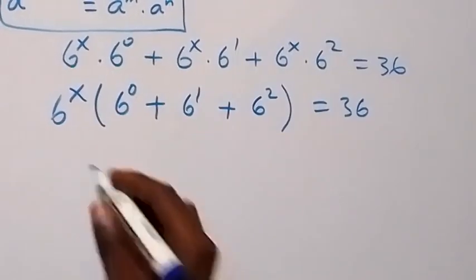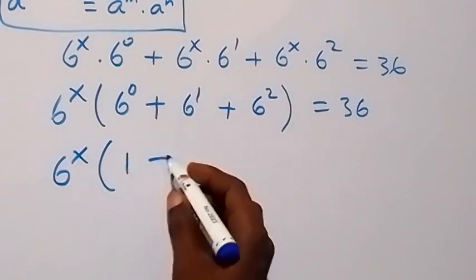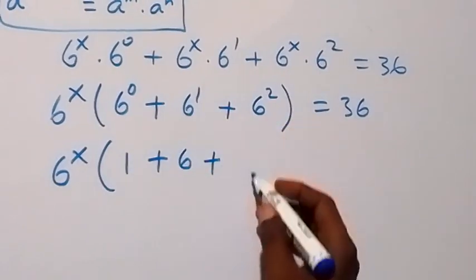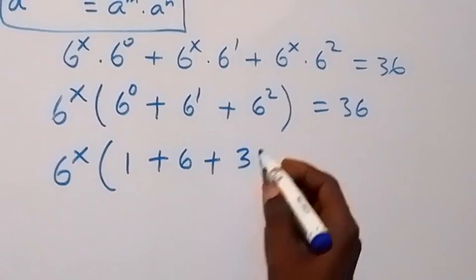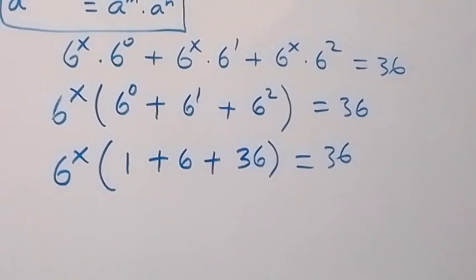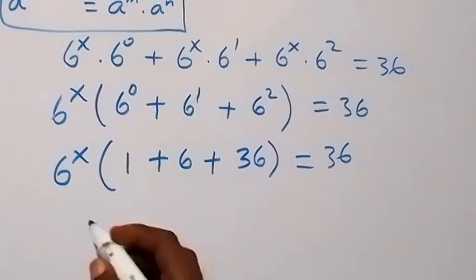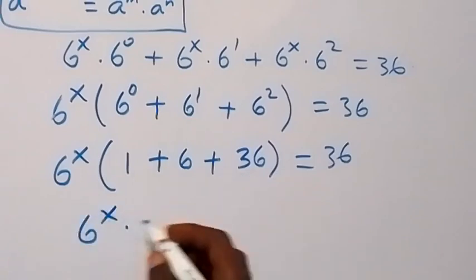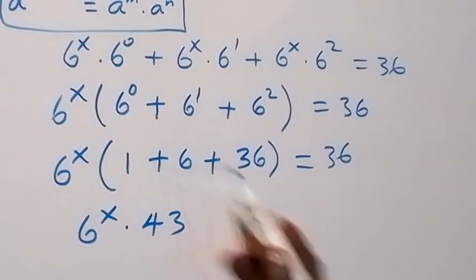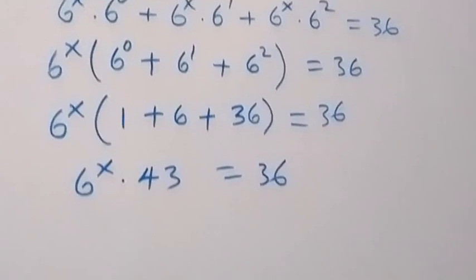From here, evaluating the bracket: 6 raised to power 0 is 1, 6 raised to power 1 is 6, and 6 raised to power 2 is 36. That gives us 42, plus 1, that's 43. So we have 6 raised to power x times 43, equals 36.